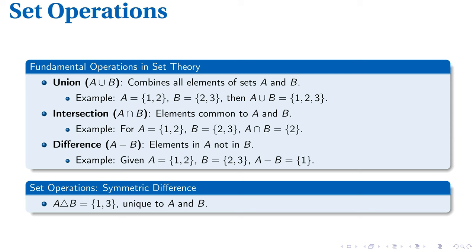Operations in set theory allow us to manipulate and analyze relationships within sets. One such fundamental operation is the union, denoted by A ∪ B, which combines all elements of sets A and B. For instance, if A = {1, 2} and B = {2, 3}, the union would be {1, 2, 3}, which contains all elements from both sets.